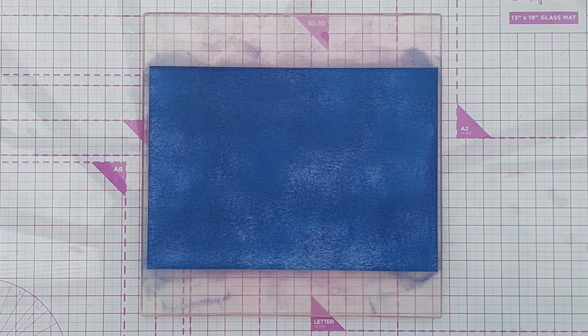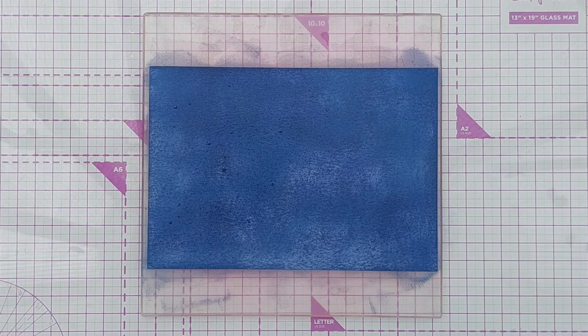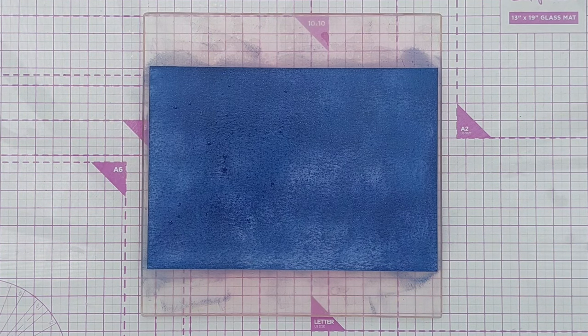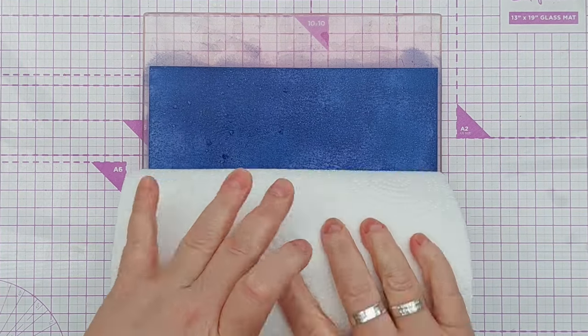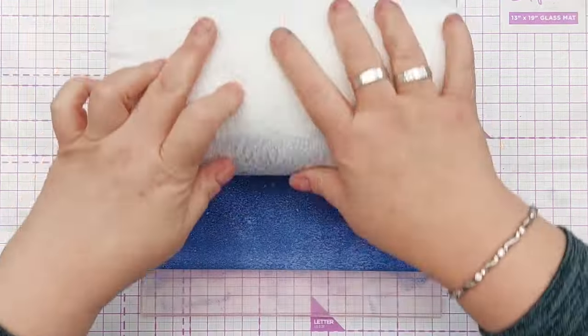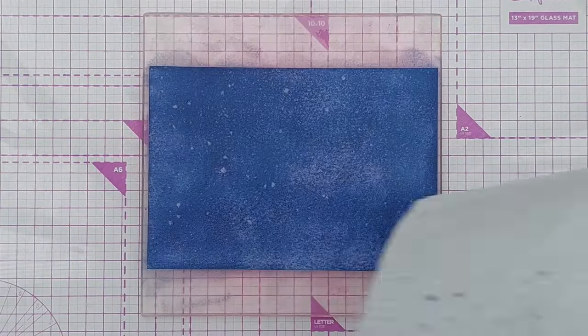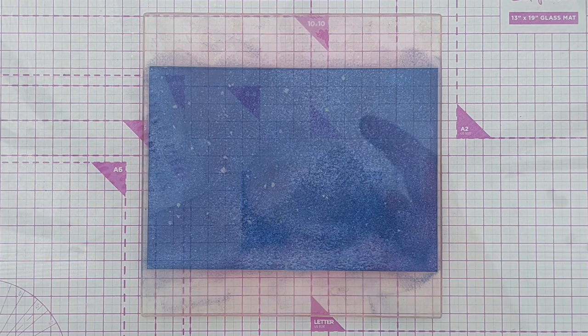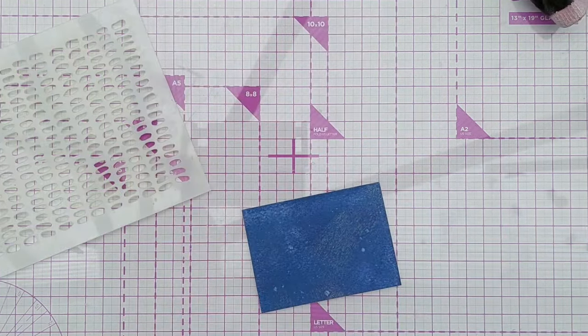Next I misted on some water to increase the speckled appearance. So I did a couple of fine mist squirts with my water bottle, left it for a few seconds, and then rolled a kitchen towel over it to pick up the water.